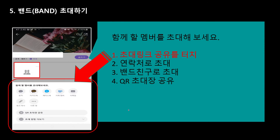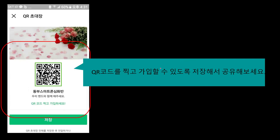초대하는 것은 초대 링크 공유 터치하시면 되는데 여러 가지 방법이 있습니다. 초대 링크 공유 터치하시면 문자로 보내서 친구한테 내 주소가 날아갑니다. 그러면 친구는 그 주소를 터치해서 들어가서 수락만 해주시면 되는 거죠. 비공개인 경우에는 리더가 승인을 해야 들어오는 거죠. 카카오톡으로도 할 수 있고요. QR 초대장으로 할 수도 있습니다. QR코드 초대장을 보내면 사진을 QR코드 찍으면 바로 가입이 되는 거죠.